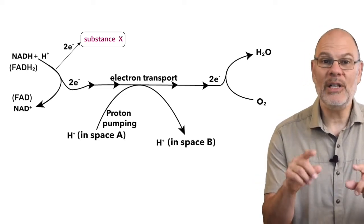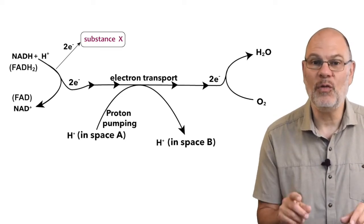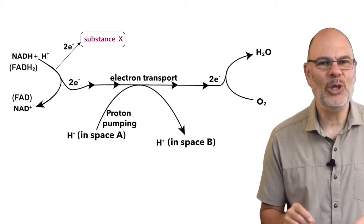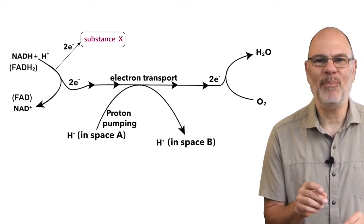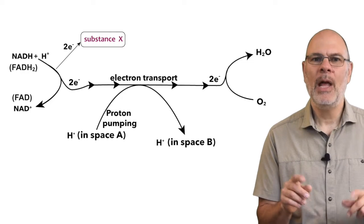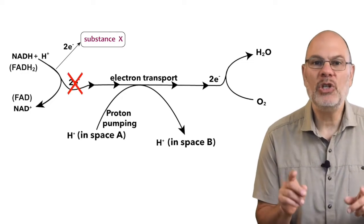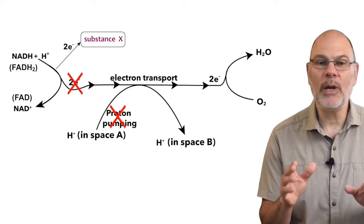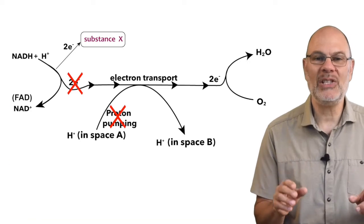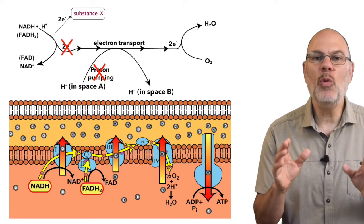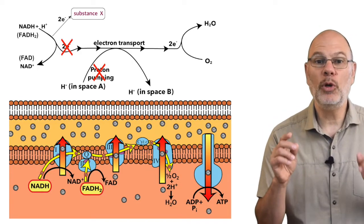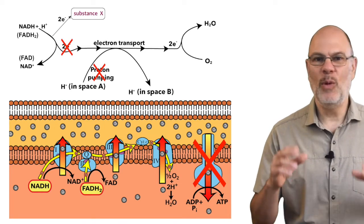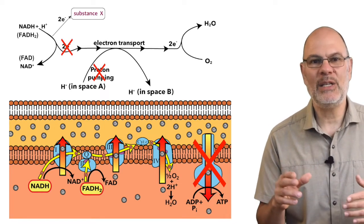I'll use evidence from the diagram as the basis of what I predict, and then use biology to make that prediction stick. Electrons no longer flow through the ETC, so protons won't get pumped to the intermembrane space. There's no more proton gradient, no more diffusion through ATP synthase. No more ATP gets made.